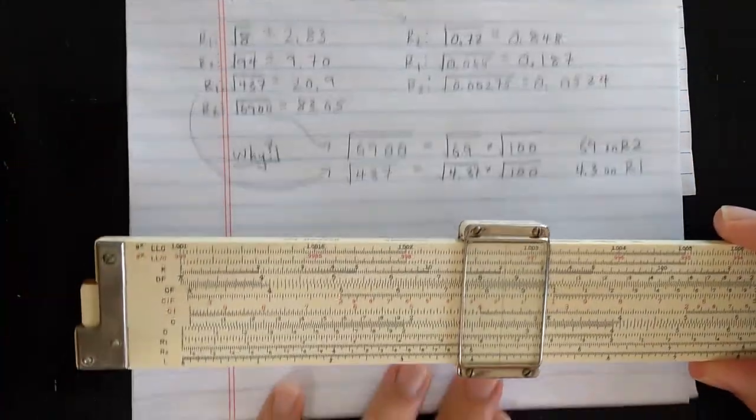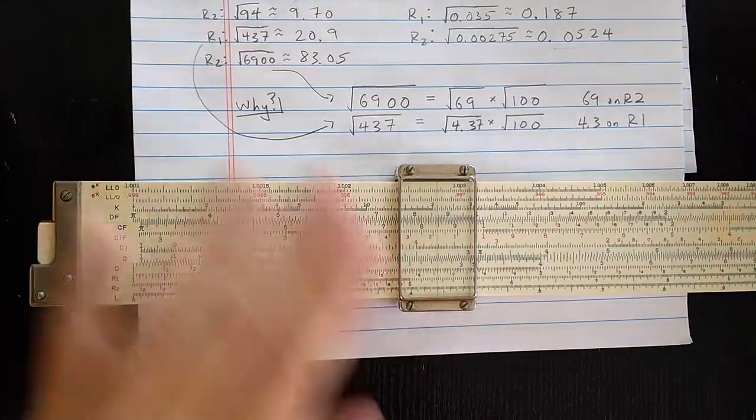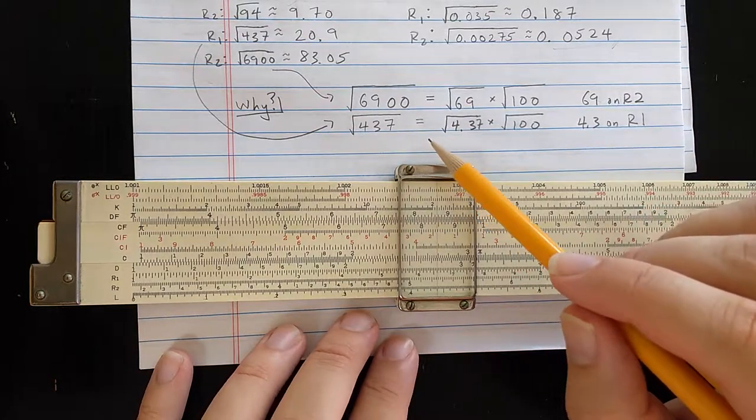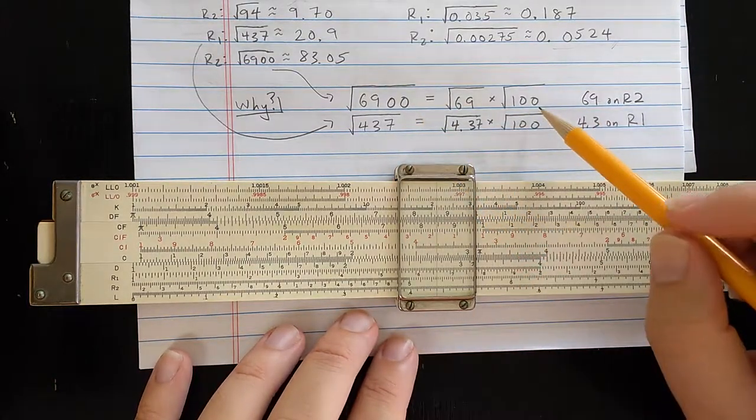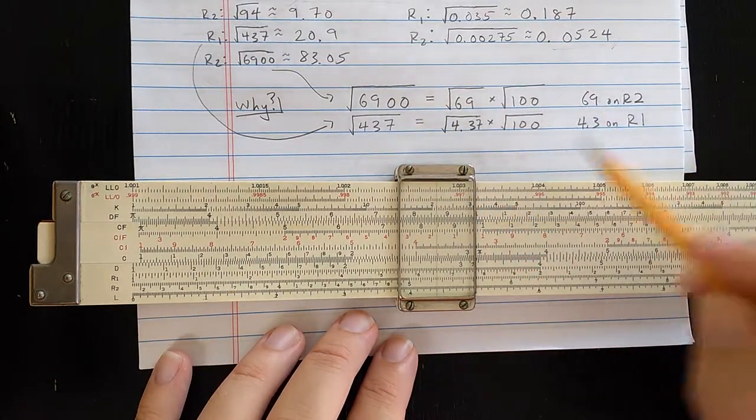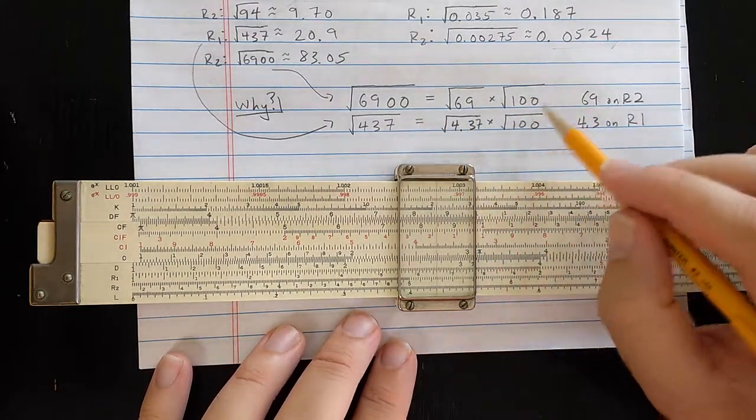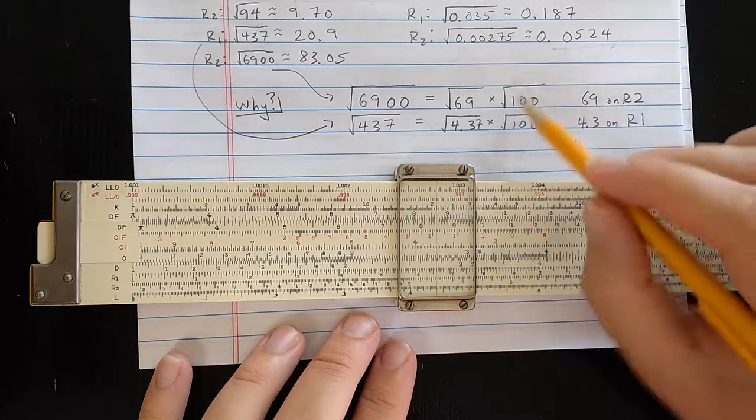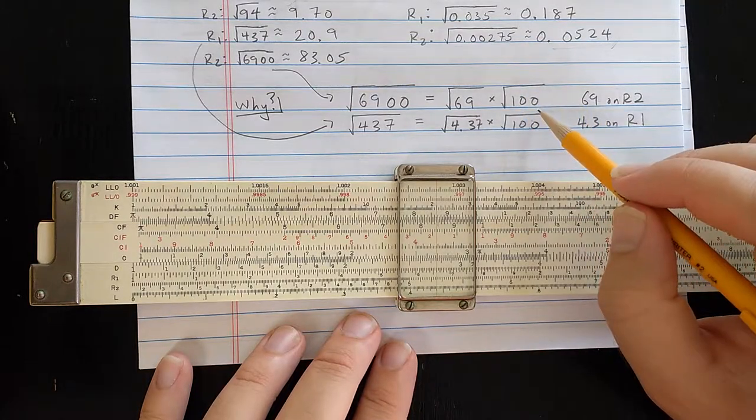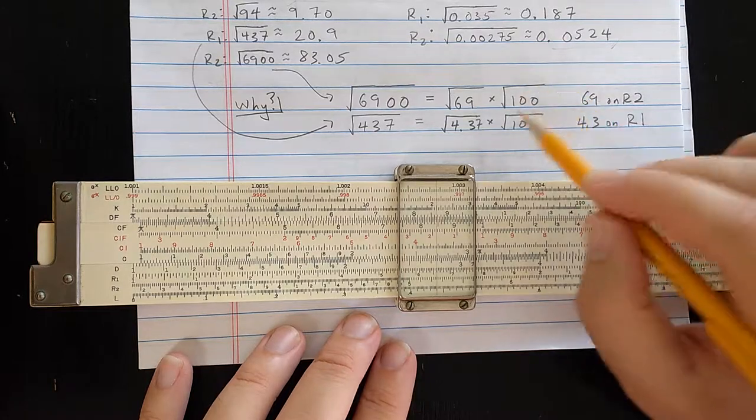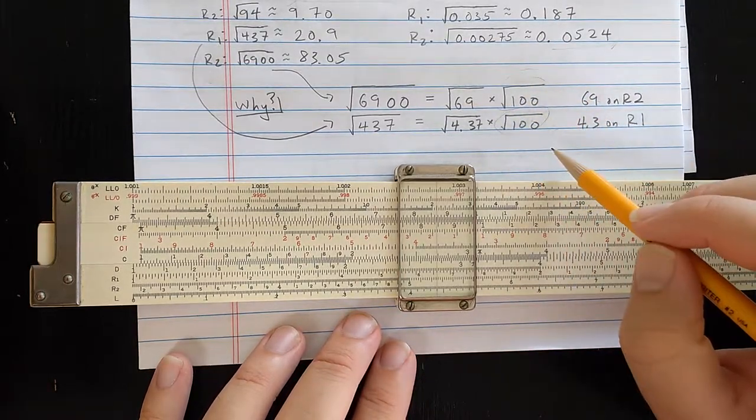Now, what about that decimal place? Why do we put it where we put it? In the result. Well, let's look at 6,900. The idea is, the square root of 100 is 10, right? So what I do is, I write this as an even power of 10. So 10 squared, like 10 to the 100, or 10 to the power of 4, 10,000. All of those have a square root, which is a power of 10.